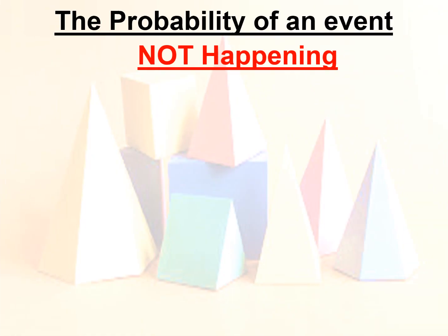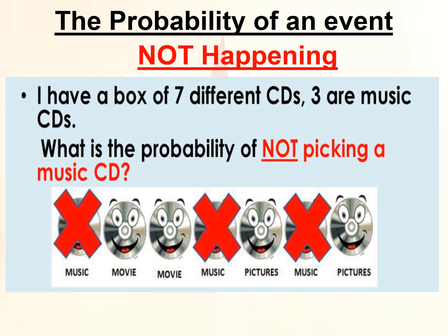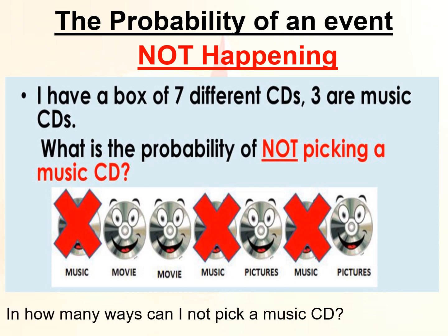The probability of an event not happening. If I have a box of seven different CDs and I have three CDs which are music CDs, what is the probability of not picking a music CD? In how many ways can I not pick a music CD? So it is 4 over 7, since there are three music CDs already.